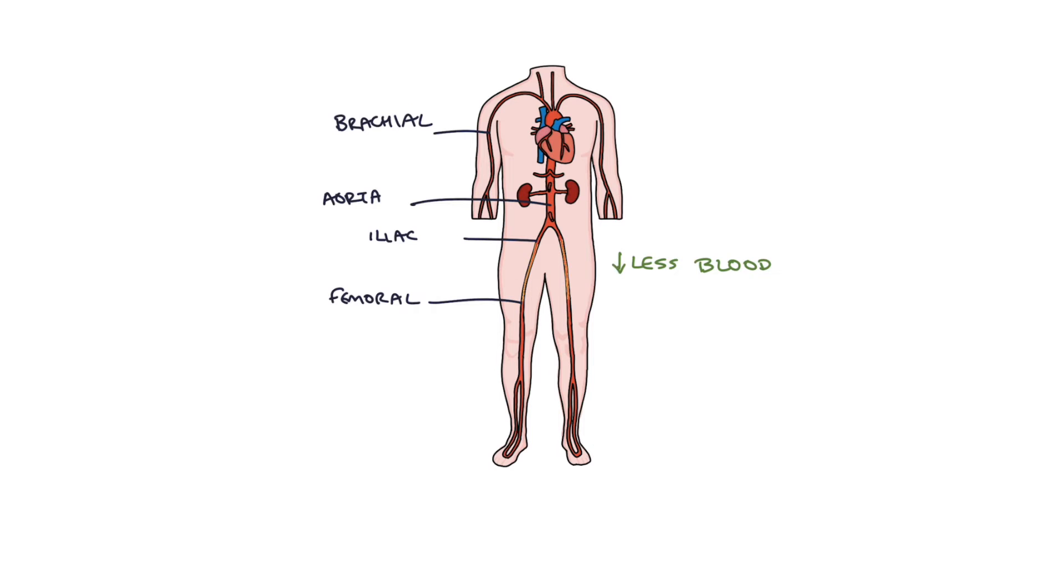So this is what we call peripheral vascular disease, and in order to measure the severity of this atherosclerotic disease in the femorals and the distal vessels we do the ankle brachial pressure index.